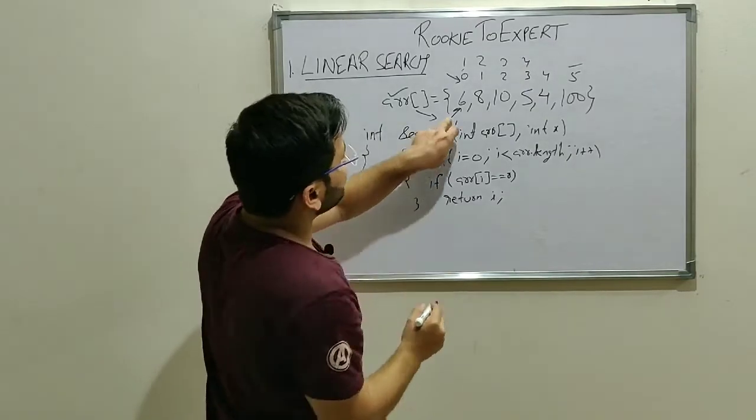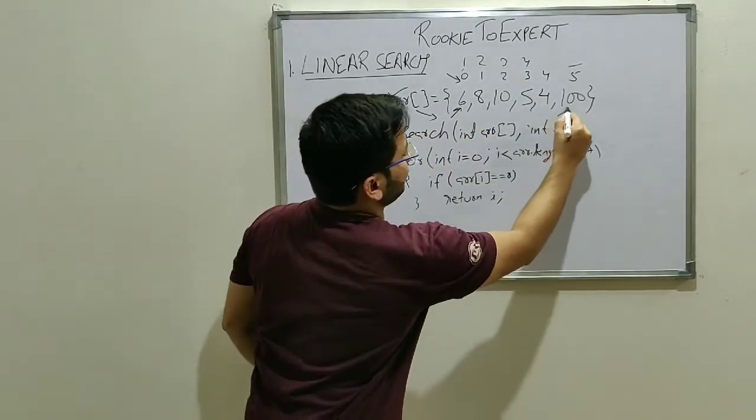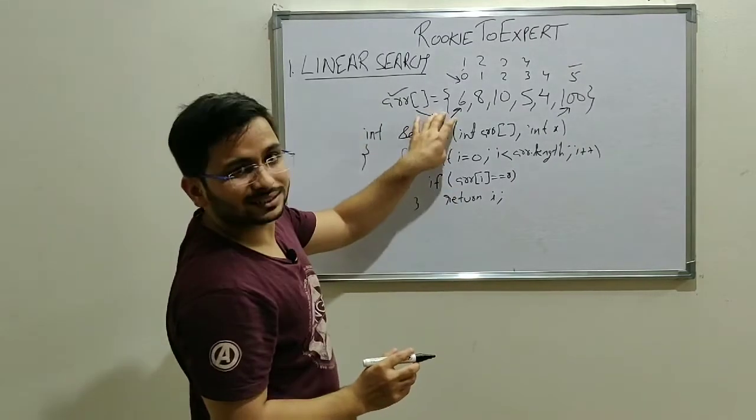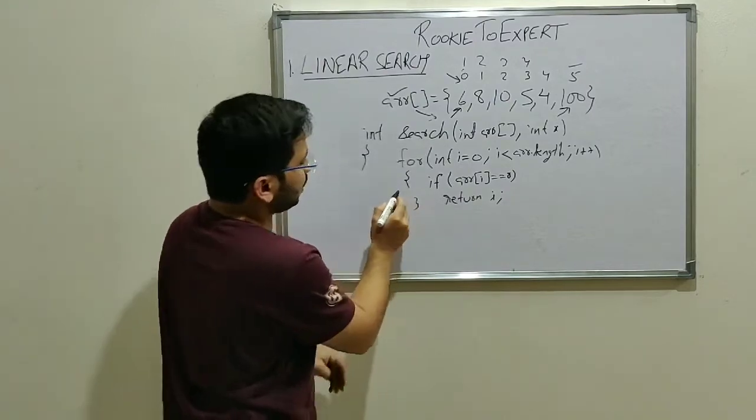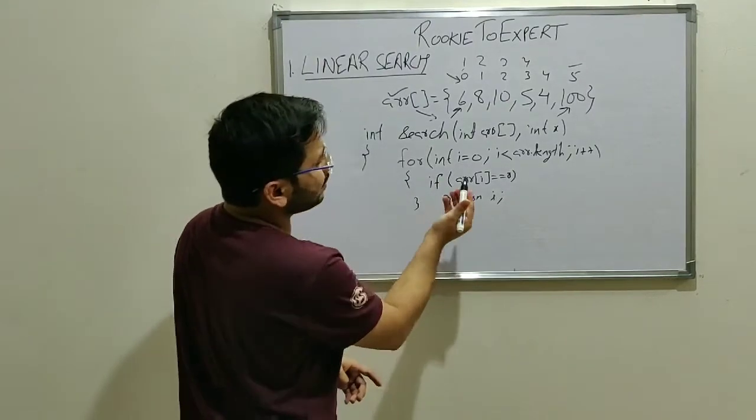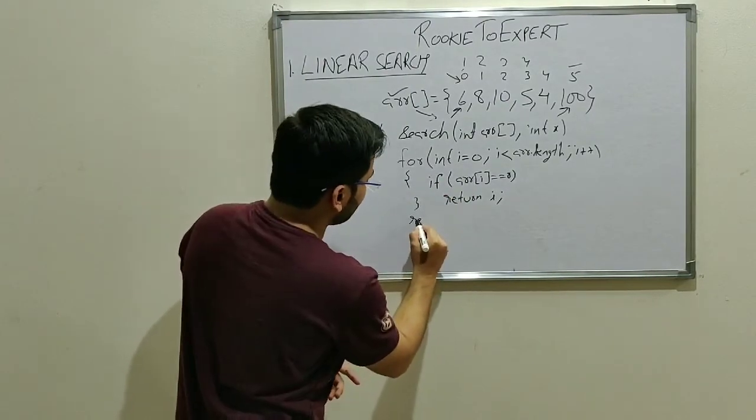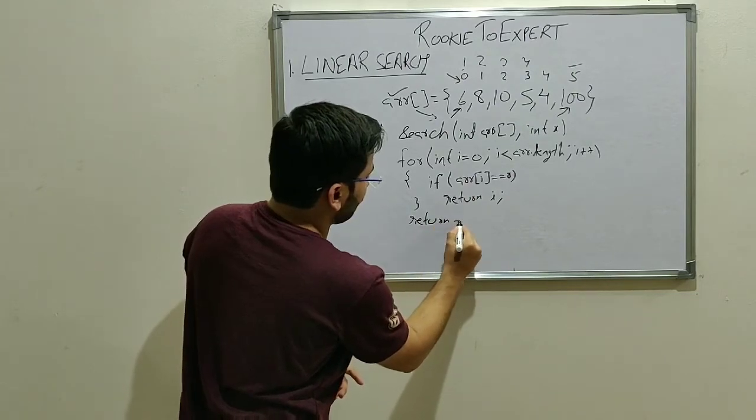And if we reach till the end of the array and we didn't find it, that means the element is not present in the array. So we are going to return minus 1. So if we come outside this for loop, that means the element is not present. And we will simply return minus 1. And this is the code snippet of this algorithm.